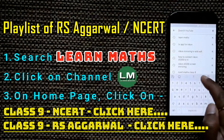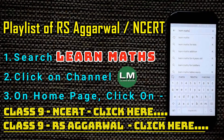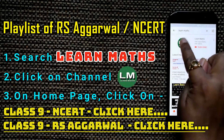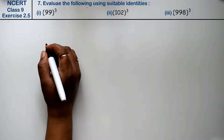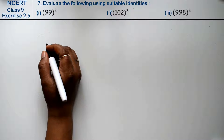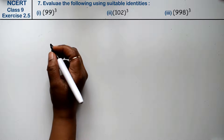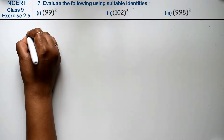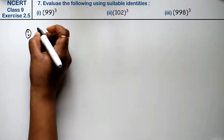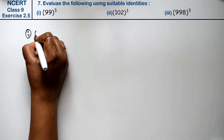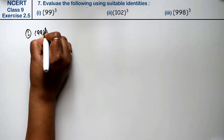Let's do question number 7 of exercise 2.5 on polynomials. Question number 7 is: evaluate the following using suitable identities. First part: we have to use an identity. Answer: 99 cube.